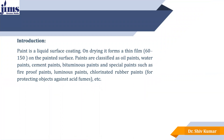Paint is a liquid surface coating. On drying, it forms a thin layer of approximately 60 to 150 microns on the painted surface like a wall, door, or any surface like metal surface etc. Paints are classified as oil paints, water paints, cement paints, bituminous paints and many more. There are a variety of paints available in the market which can be used for painting cars, houses, industries, and everything including furniture like sofa sets, metals, chairs, metal tables etc.